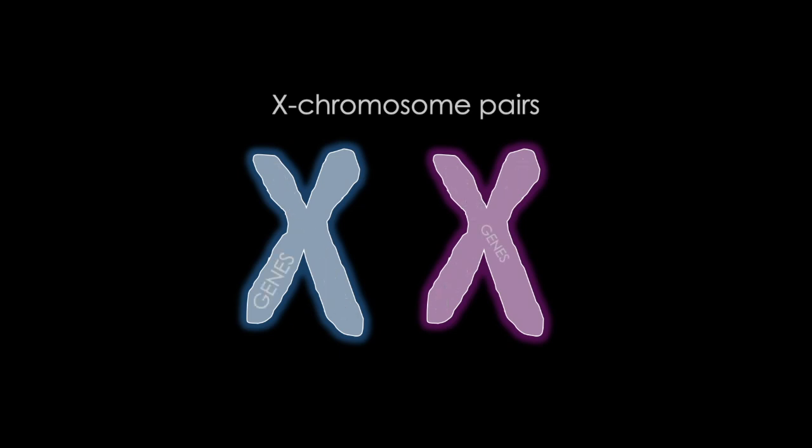In females, these chromosomes undergo a unique process in order to ensure that the X chromosomal genes aren't overexpressed. During development, one X chromosome is randomly silenced. This becomes the inactive chromosome, and the non-silenced one is the active chromosome. This concept is called X chromosome inactivation.